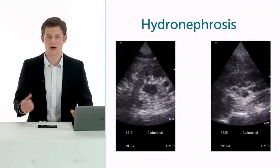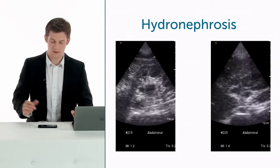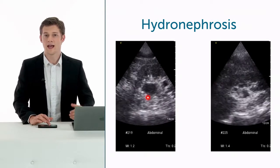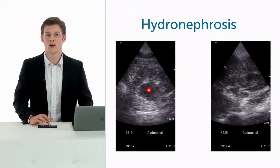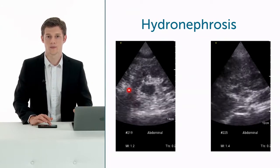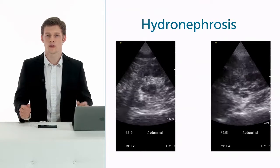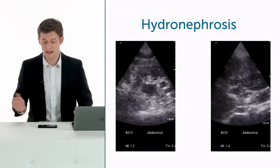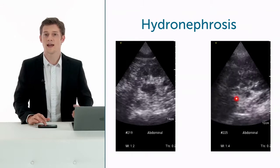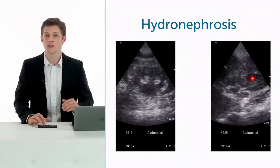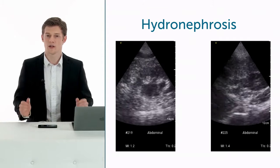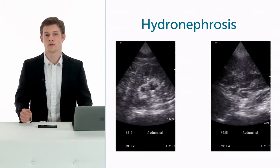Two more cases of hydronephrosis for you. On the left hand side, you see a dilatation of the renal pelvis and the dilatation of the renal calyces with a narrowing of the renal parenchyma. This is a clear case of grade 3 hydronephrosis. On the right hand side, you see a dilatation of the renal pelvis and the renal calyces too, but no narrowing of the renal parenchyma at all — a very clear case of grade 2 hydronephrosis.